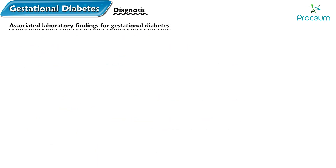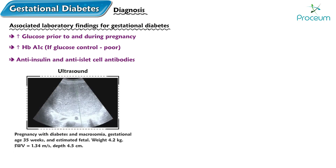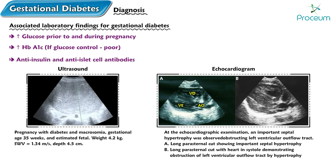Associated laboratory findings for gestational diabetes include elevated glucose prior to and during pregnancy, increased hemoglobin A1c if glucose control is poor, and the presence of anti-insulin and anti-islet cell antibodies in cases of type 1 diabetes mellitus. Ultrasound and echocardiogram should be used to identify fetal cardiac, neurologic, and growth abnormalities.